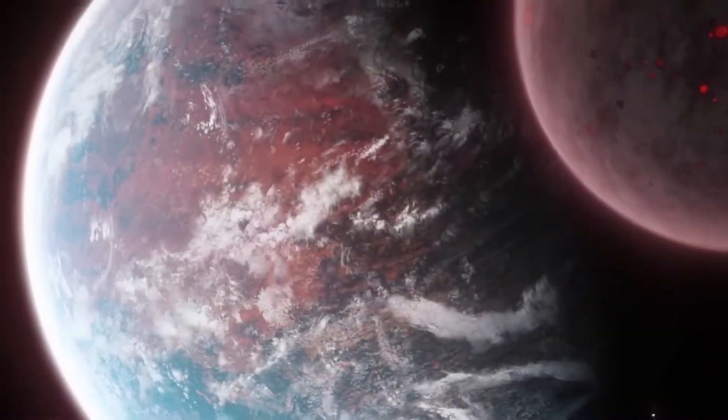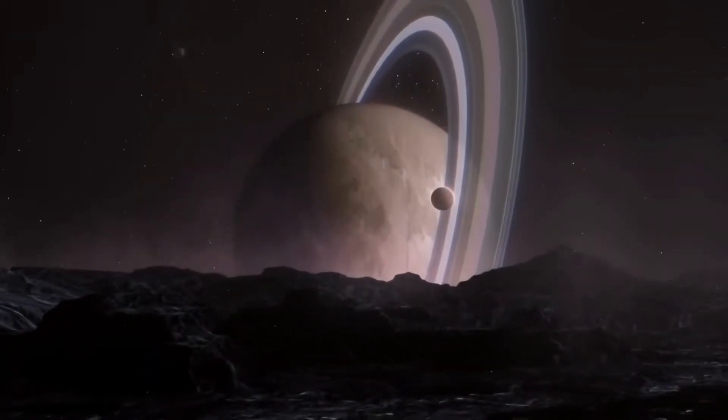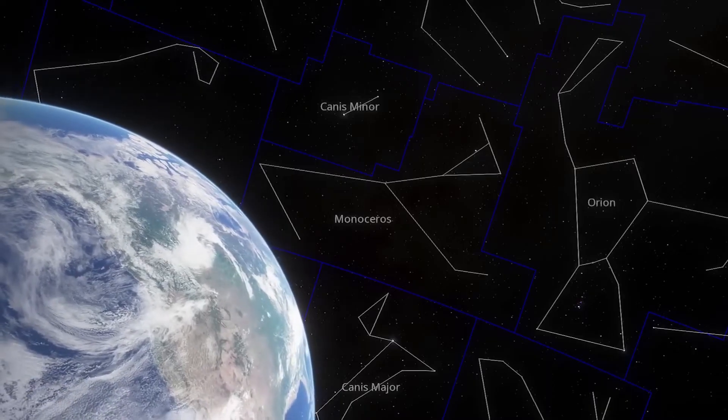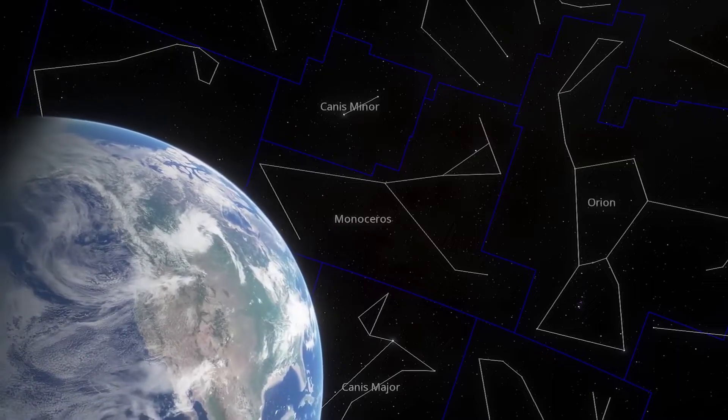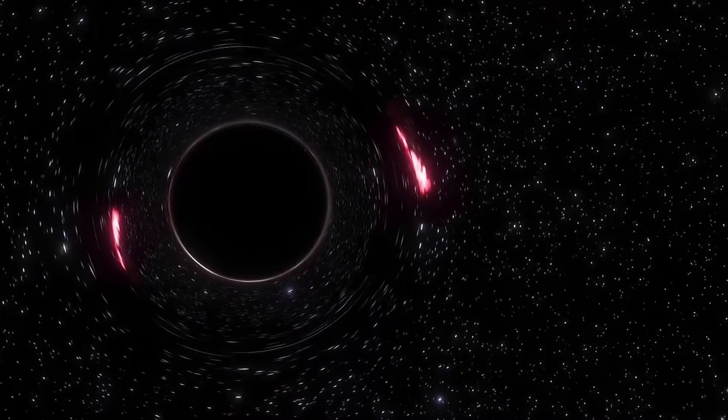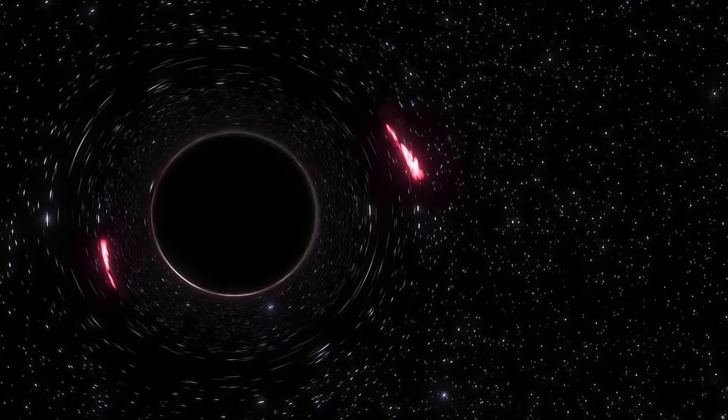But one light year is a very short distance in the universe. The closest nebula to Earth is 1,500 light years away, which suggests that the universe is vaster than we can imagine.